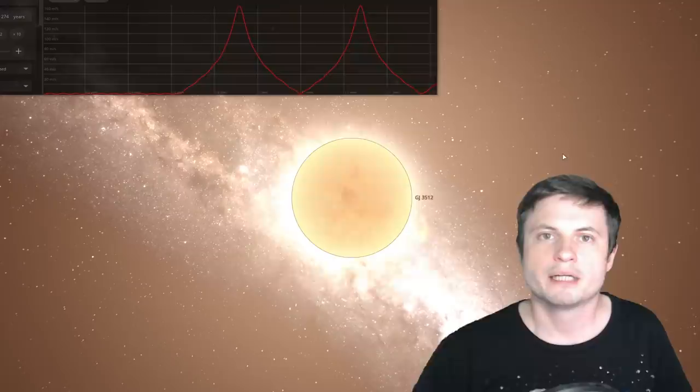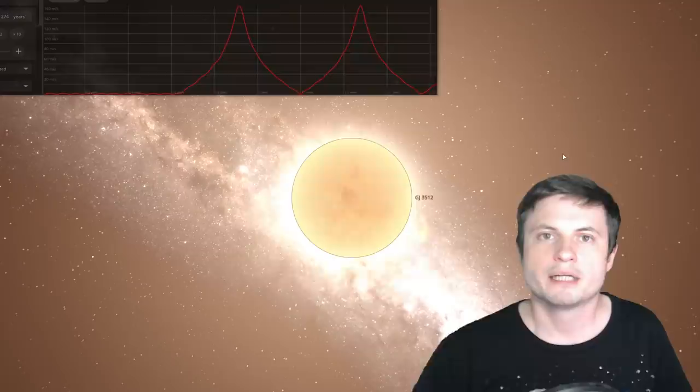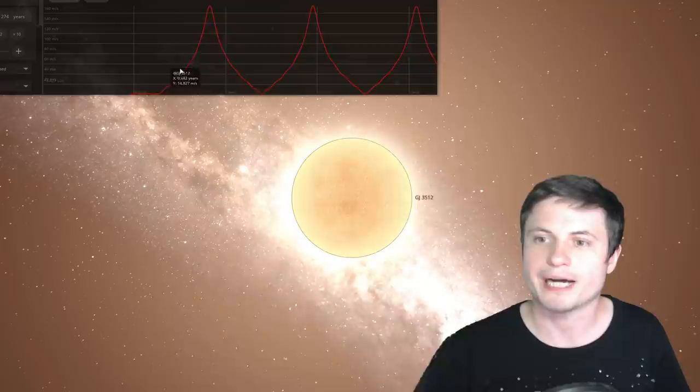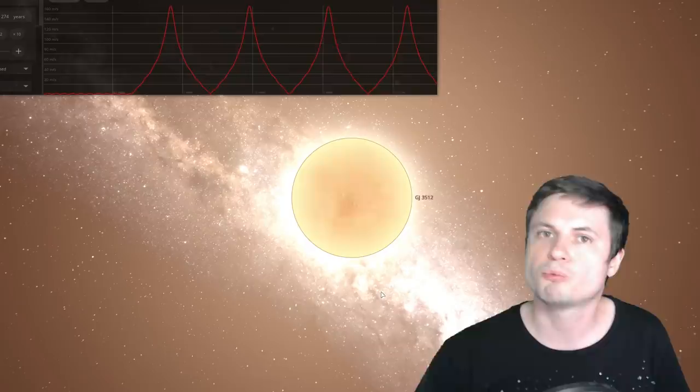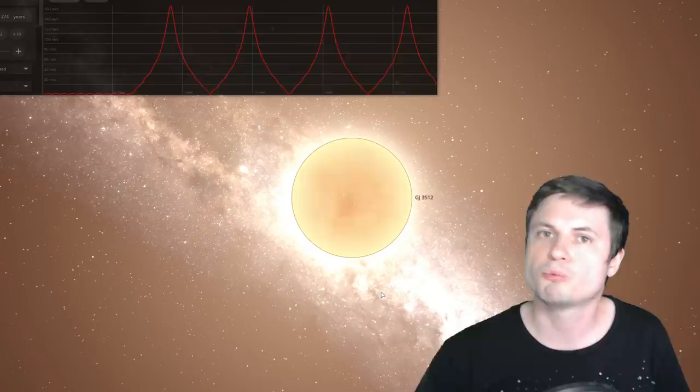But when looking at the star, this is not what the scientists saw. What they saw was this. The pattern of velocity was very similar to what you're seeing here, where it was kind of strangely shaped and the maximum velocity of the star increased by about 180 to maybe even 200 meters per second. And this suggested that something really massive was orbiting it in a somewhat unusual orbit.